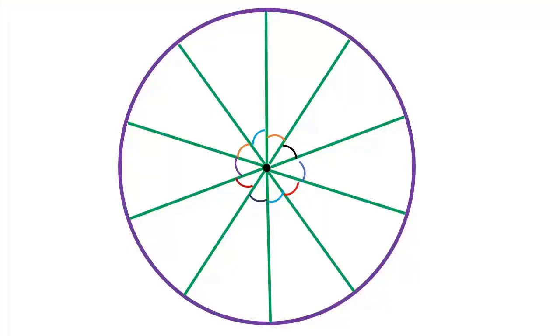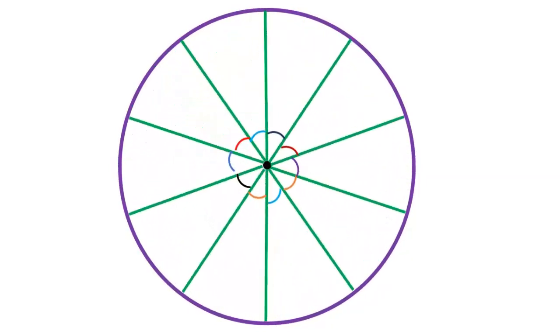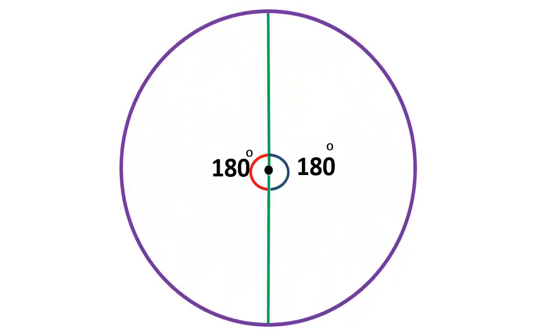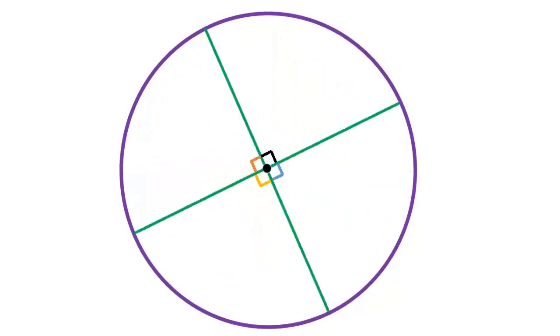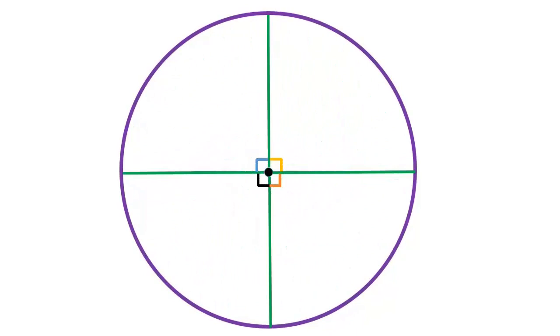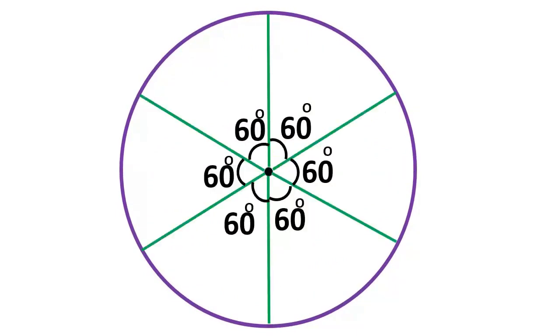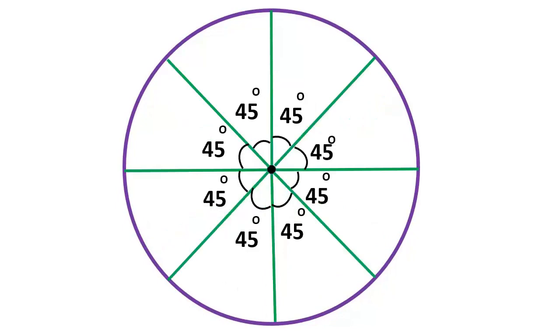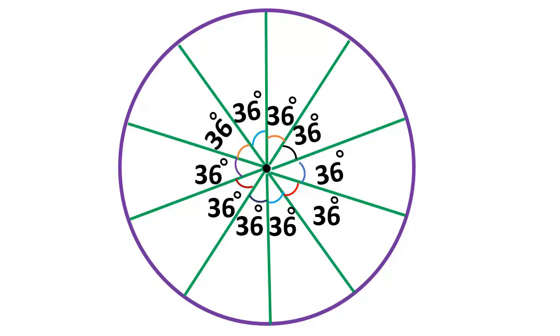Vimal is making a wheel using spokes. He wants to fix equal spokes in such a way that the angles between any pair of consecutive spokes are equal. When he fixes two spokes, the angle 180 degrees is formed. Four spokes, the angle 90 degrees is formed. Six spokes, the angle 60 degrees is formed. Eight spokes, the angle 45 degrees is formed. Ten spokes, the angle 36 degrees is formed.